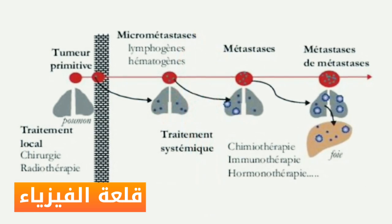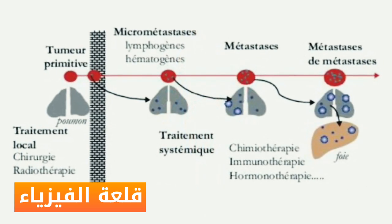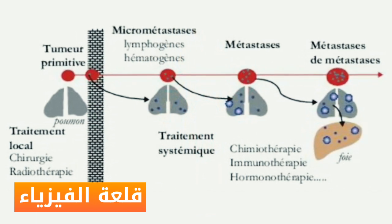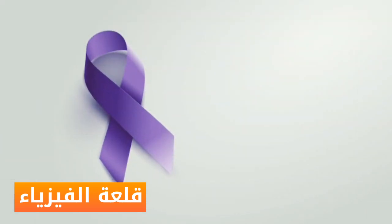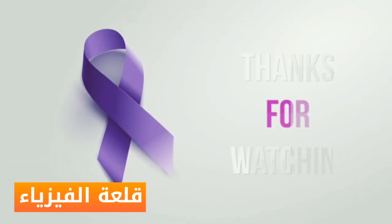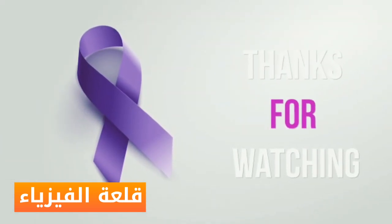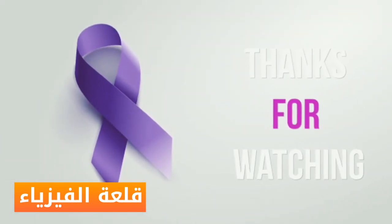Once in a new area, the cancer undergoes proliferation again and forms into small tumors known as micrometastasis. The micrometastasis grow into full-fledged tumors and complete the metastasis process. I hope you will benefit from this topic, and thanks to this channel for the initiative.